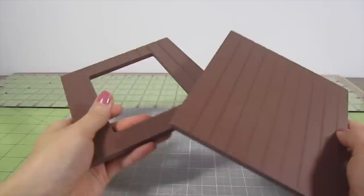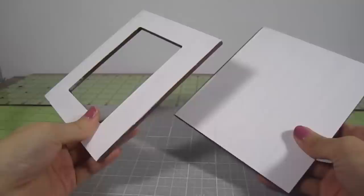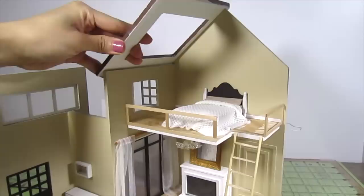These are the 2 roof pieces that are included. The only change I made was to paint the interior side white. Then just glue them to the top of the dollhouse with some wood glue. Also glue on the big windowpane on the left side roof.